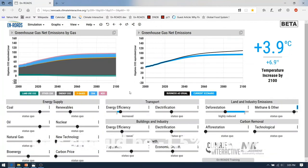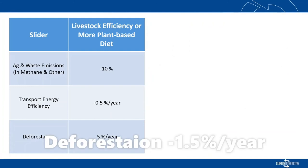The net result of a change to either more efficient livestock or lower demand for animal products is 0.3 degrees. This table summarizes the slider positions: minus 10% on the Agriculture and Waste Emissions slider, an additional half a percent per year on the Transport Energy Efficiency slider, and minus five percent per year on deforestation.